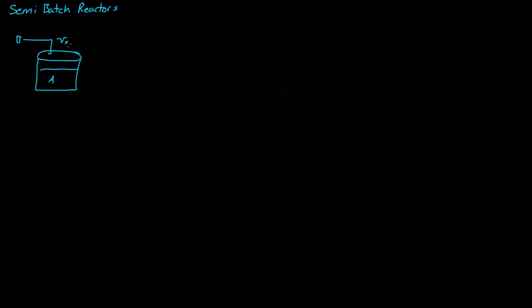If we were to do a mole balance around the system — a mole balance around A — the general balance is: the molar flow rate of A into the system, minus the flow rate of A out of the system, plus the integral of R_A dV, must equal the change in the moles of A with respect to time, dNA/dt.